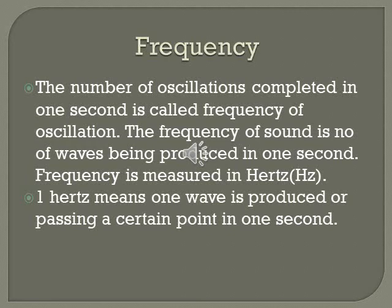A frequency of 100 hertz means that 100 waves are passing each second. The time period of the wave can be calculated as: time period is equal to one over frequency. Time period is the inverse of frequency.